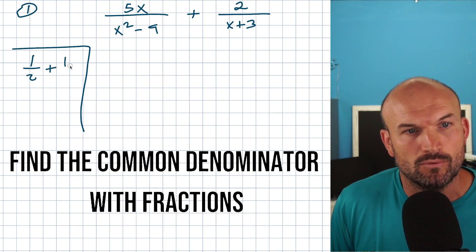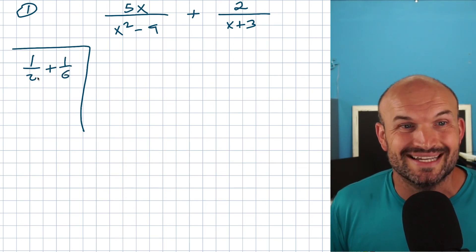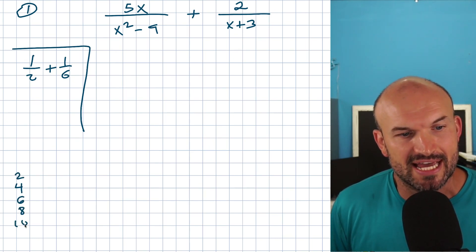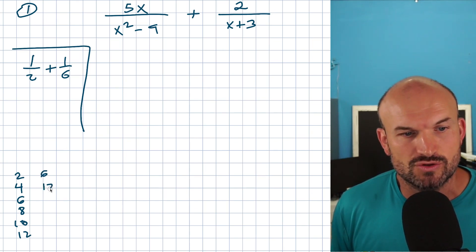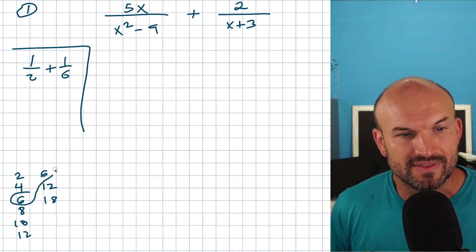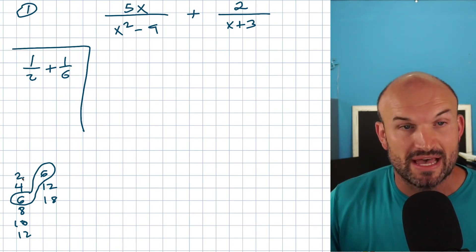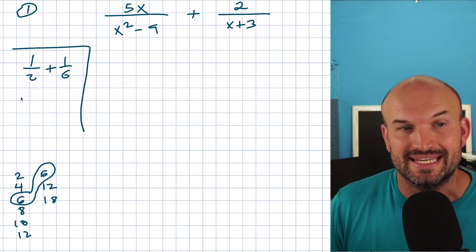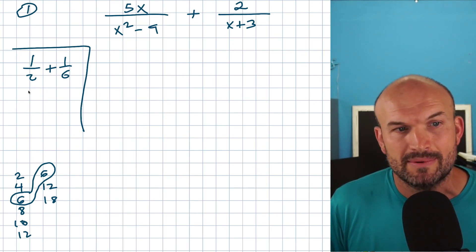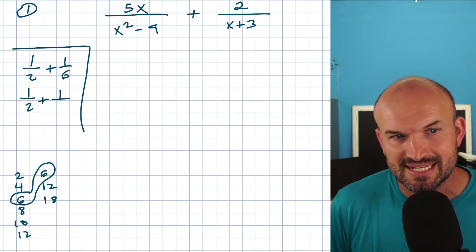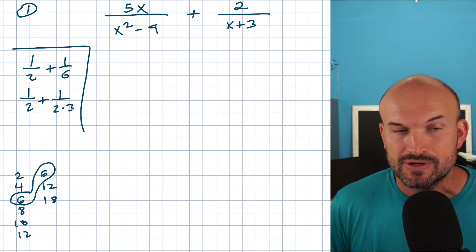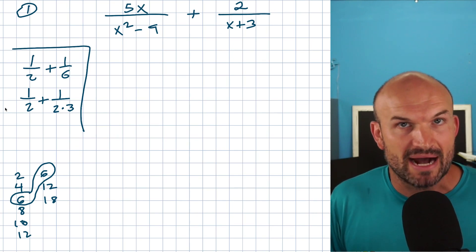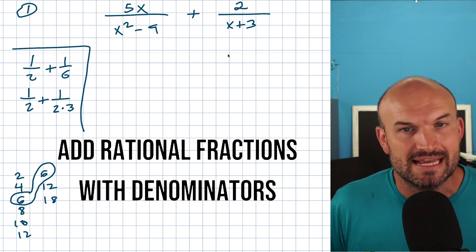What if I had one half plus one over six? The smallest number they both share is not going to be 12. If you list out the multiples of two — two, four, six, eight, ten, twelve — and the multiples of six — six, twelve, eighteen — the least common multiple is going to be six. Since six is a composite number, we can break it down into two times three, showing we just need to multiply the left-hand side by three on the top and bottom. When dealing with polynomials, it's the exact same idea.